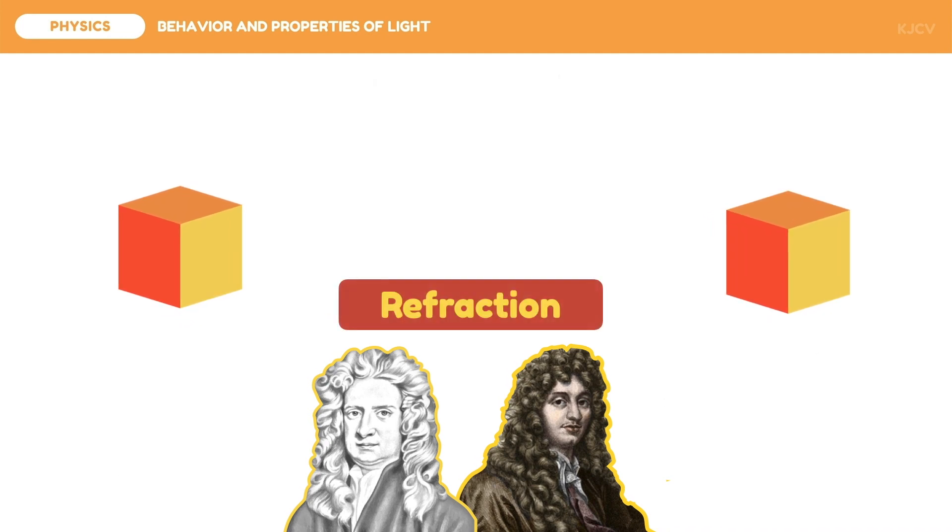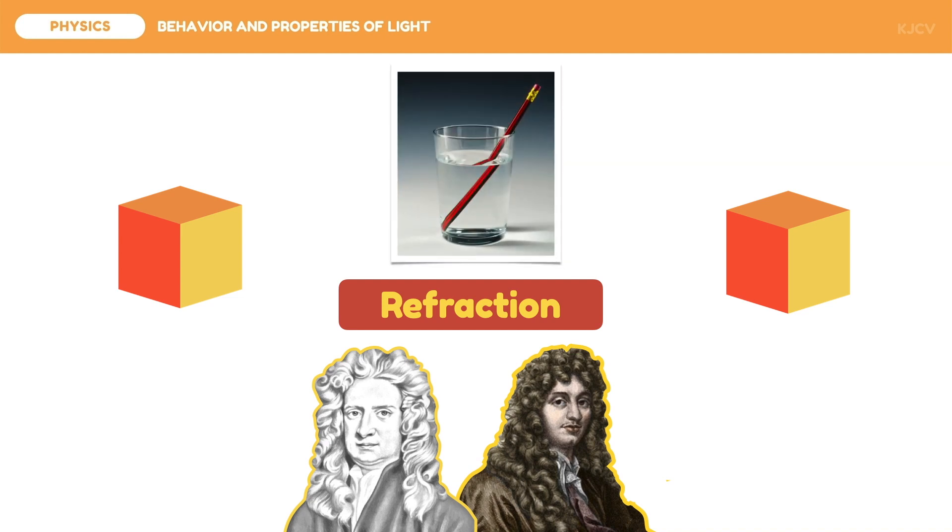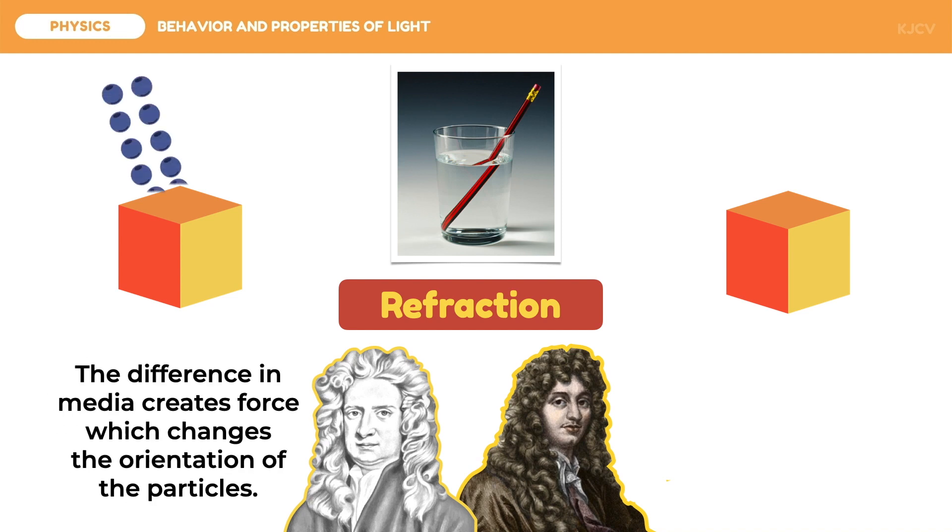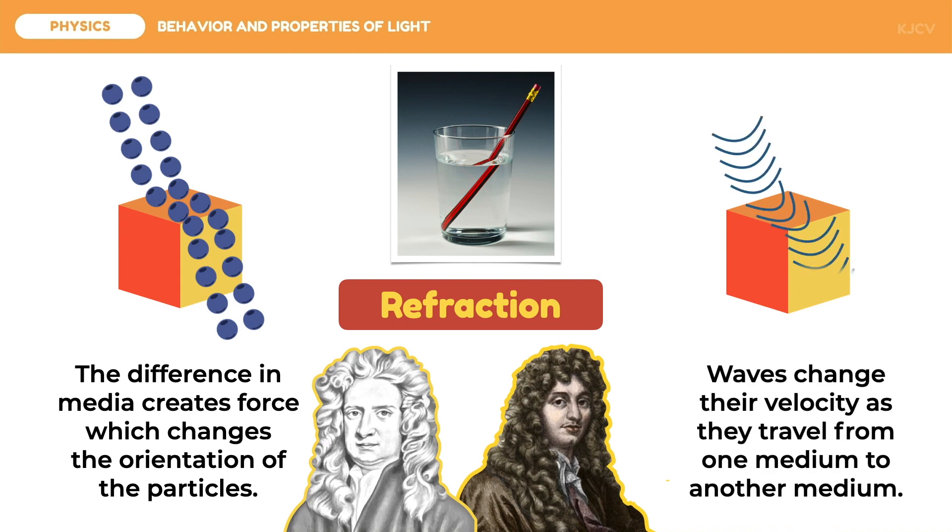On the other hand, refraction is commonly described as the bending of light because light changes its direction as it passes from one medium to another. It results in the whole object or a part of the object appearing to be displaced as an image. Light as a particle is refracted by the difference in media that creates force which changes the orientation of the particles. On the other hand, light as a wave refracts due to the change in velocity of the waves as they travel from one medium to another.